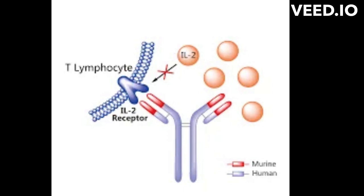It is used to prevent acute rejection of organ transplants, specifically kidney transplants. The mode of action is that Basiliximab blocks the interaction between T-lymphocytes and IL-2, which is a protein that promotes the activation and proliferation of T-lymphocytes.